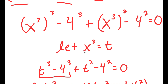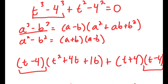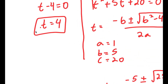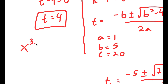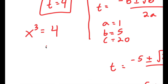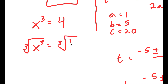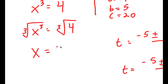Going back, remember we let x to the power of 3 equal t. We can't take the power of a number and make it equal to an imaginary solution, meaning we can't use those imaginary values of t. So the only value of t I can use is t equals 4. If t equals 4, I get x to the power of 3 is equal to 4. Taking the cube root on both sides, the cube root of x to the power of 3 is x, so I'm left with x is equal to the cube root of 4.